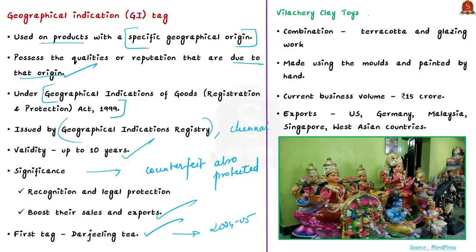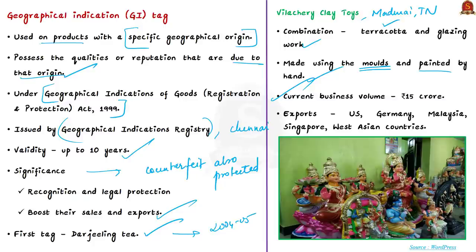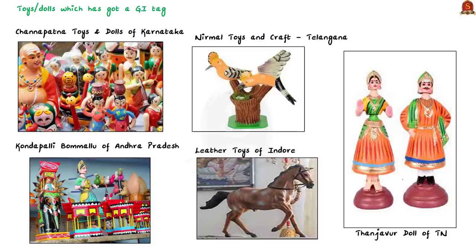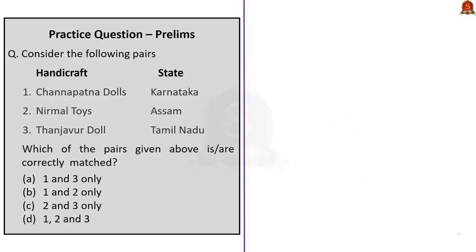Villacherry clay toys are made in Madurai district of Tamil Nadu. They are a unique and exclusive combination of terracotta and glazing work done on special clay, which artisans get from a tank near Villacherry. The artisans make dolls using molds and then paint them by hand. The current business volume is around ₹15 crore and they are exported to USA, Germany, Malaysia, Singapore, etc. GI tag is being sought to maintain uniqueness and save the business. Other toys with GI tags include Channapatna toys and dolls of Karnataka, Kondapalli Bommalu of Andhra Pradesh, Nirmal toys and crafts of Telangana, leather toys of Indore, and Thanjavur dolls of Tamil Nadu.